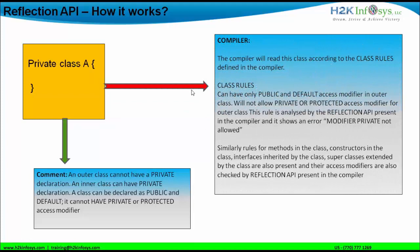If you look at this particular class, the compiler will read the class according to the class rules. The class rule says you can have public, abstract, or final access modifiers used with the outer class. It will not allow private or protected access modifiers for the outer class. But yes, the inner class can be private or protected. This rule is analyzed by the compiler present in the JVM, and after the analysis it will throw a syntax error if we are creating an outer class with a private or protected modifier. An outer class can only be public, abstract, and final.